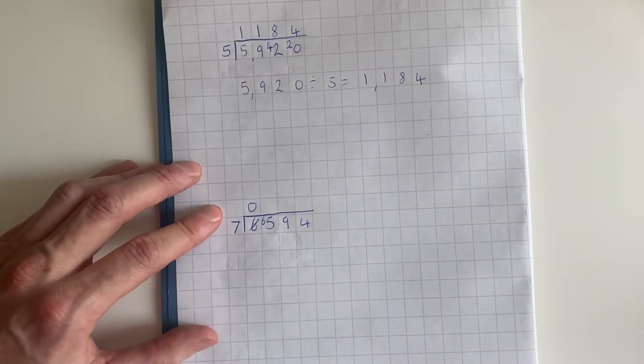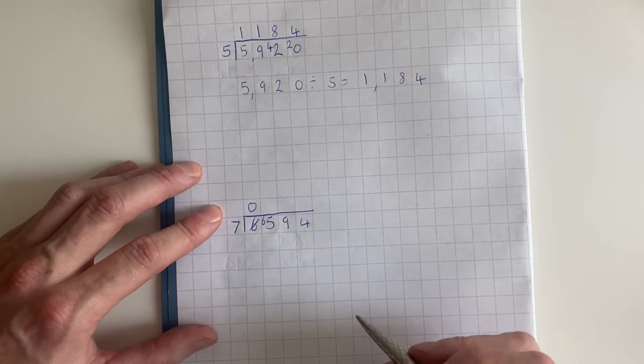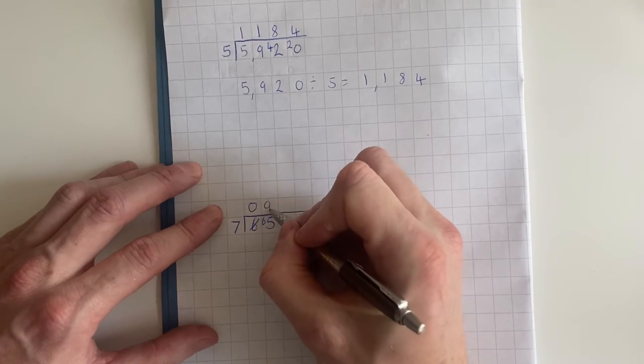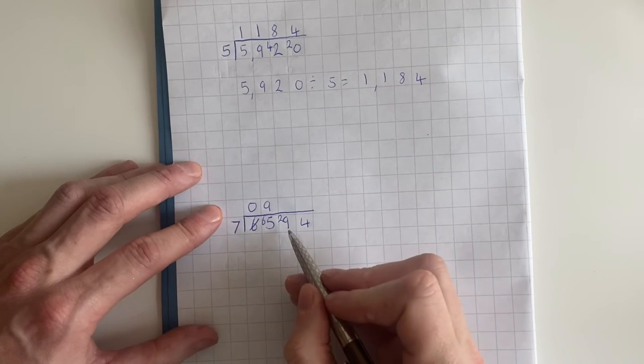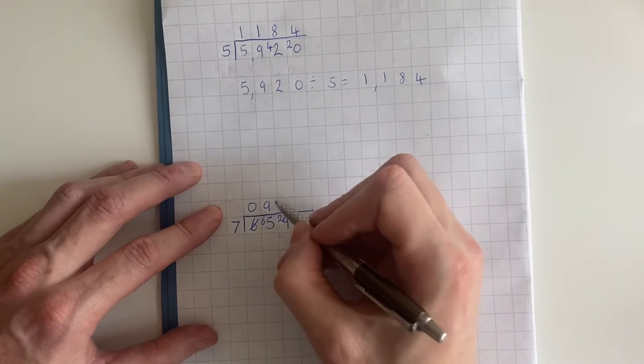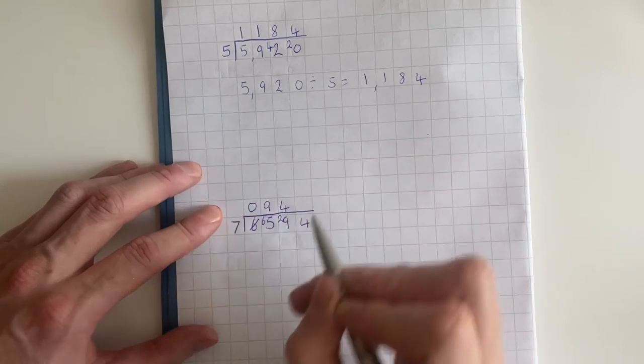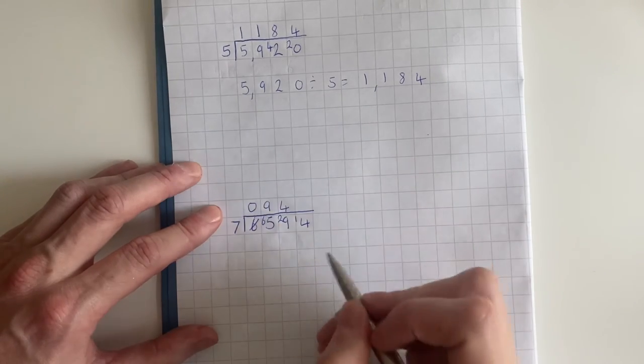How many sevens go into sixty-five? Seven times nine is sixty-three and that leaves us with two. Seven times four equals twenty-eight and we have one remaining.